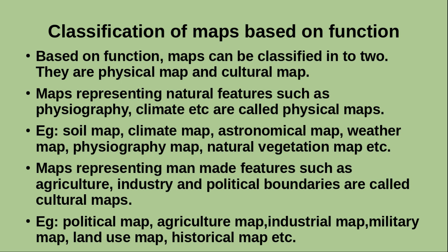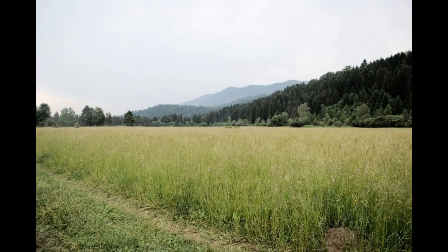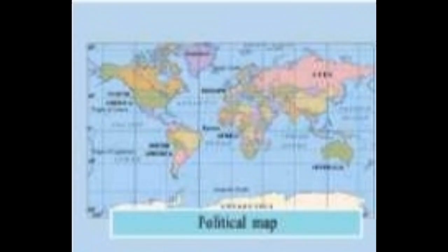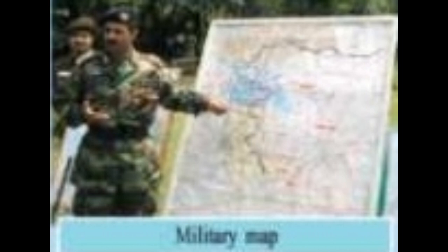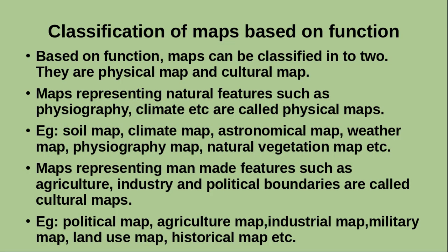Maps representing man-made features such as agriculture, industry, and political boundaries are called cultural maps. Examples of cultural maps include political map, agriculture map, industrial map, military map, land use map, historical map, etc.